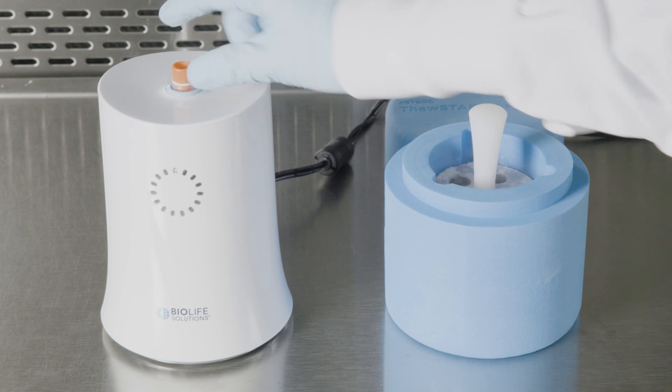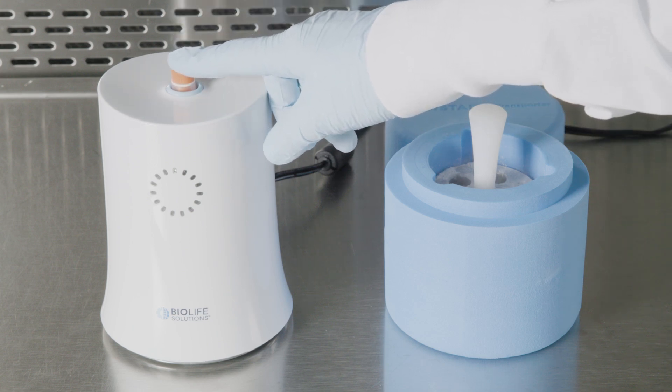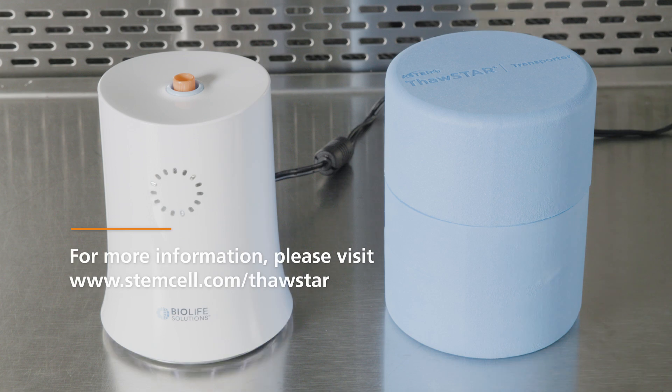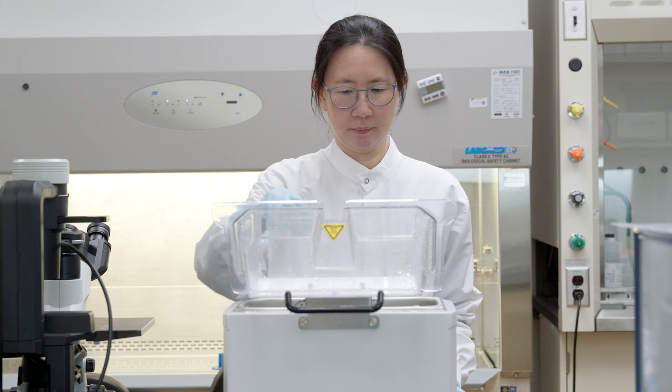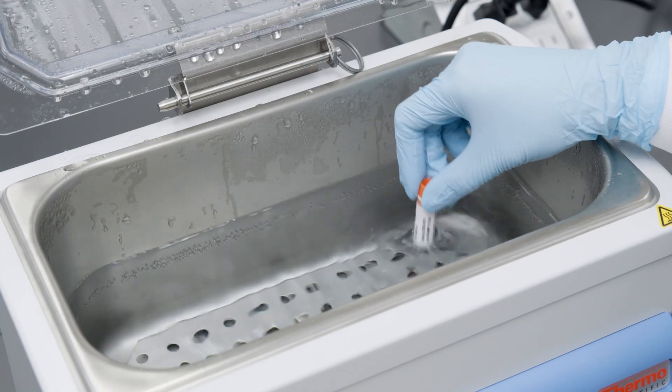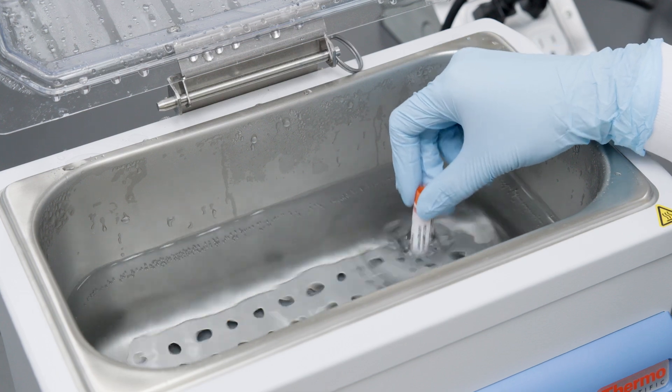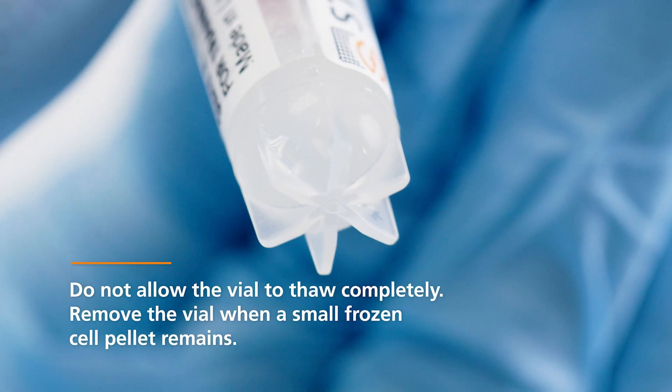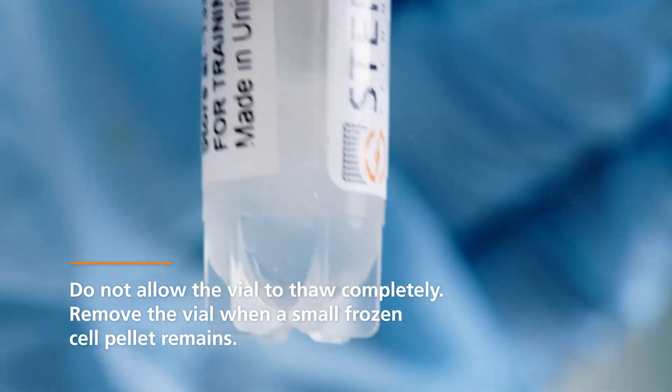The cell thawing process should be performed quickly to ensure optimal cell viability and recovery. For consistent thawing and reduced variability, we recommend using the automated ThawStar CFT-2 or you can thaw the cells in a 37 degrees Celsius water bath for two to three minutes by gently shaking the vial. Do not allow the vial to thaw completely. Instead, remove the vial when a small frozen cell pellet remains.